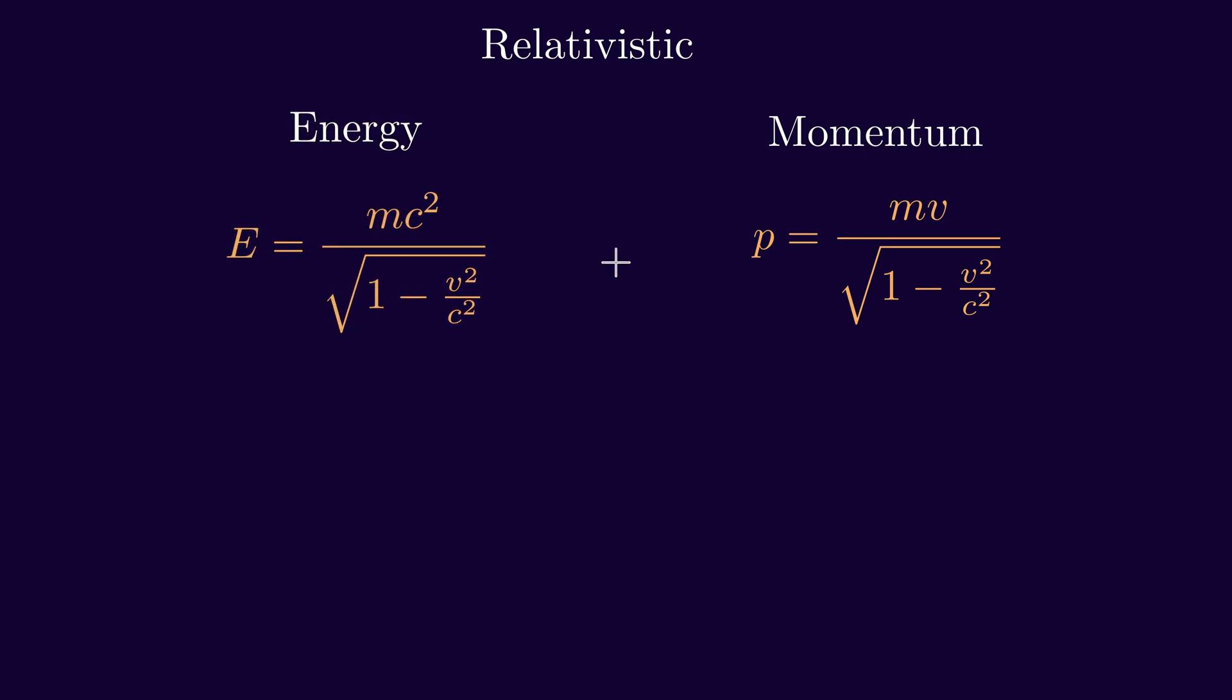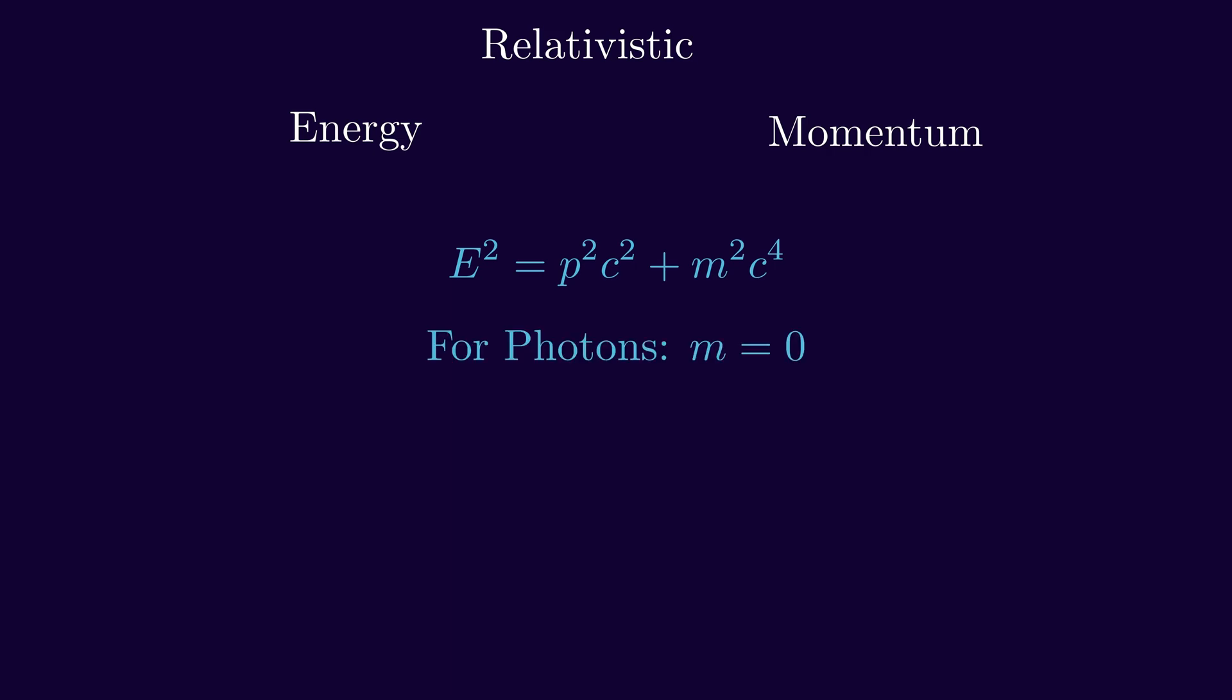By combining the expressions for momentum and energy and eliminating velocity, we arrive at the well-known equation relating energy and momentum. Incorporating zero mass for photons, we get p equals E over c. Thus, a photon's momentum is simply its energy divided by the speed of light.